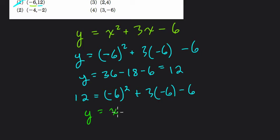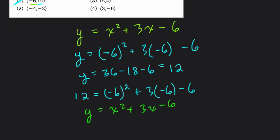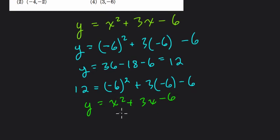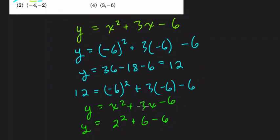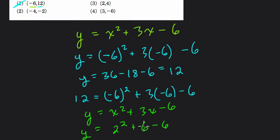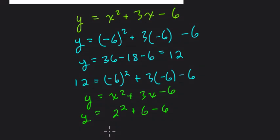So y equals x squared plus 3x minus 6. And the input is 2 this time. So it's 2 squared plus 6 minus 6. Because 3 times 2 is 6. So 4 plus 6 is 10 minus 6 is 4. So the input was 2, the output was 4. That is correct. That means it is on the function.